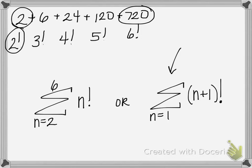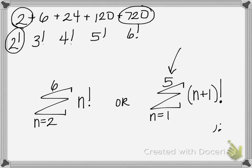Now we have to adjust the upper limit. We wouldn't want to substitute in 6, because 6 plus 1 would give 7 factorial, which is too large. Our last value needs to be 6 factorial, which is 720. So we would actually need to substitute in 5 as the last value — 5 plus 1 gives 6 factorial, which is 720. So here are two ways of writing the series in sigma notation, though of course there are additional ways.